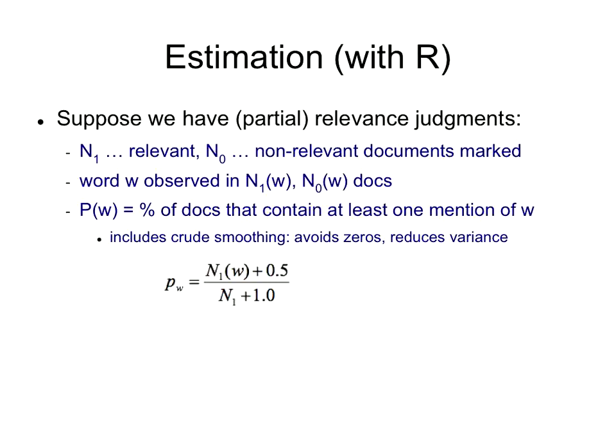If I had n1 relevant documents and n1w of them contained the word w, then my estimate for pw, the probability that the word occurs in a randomly picked relevant document, is just the number of documents that contain w divided by the total number of documents. Straightforward, max likelihood, obvious way to do it.